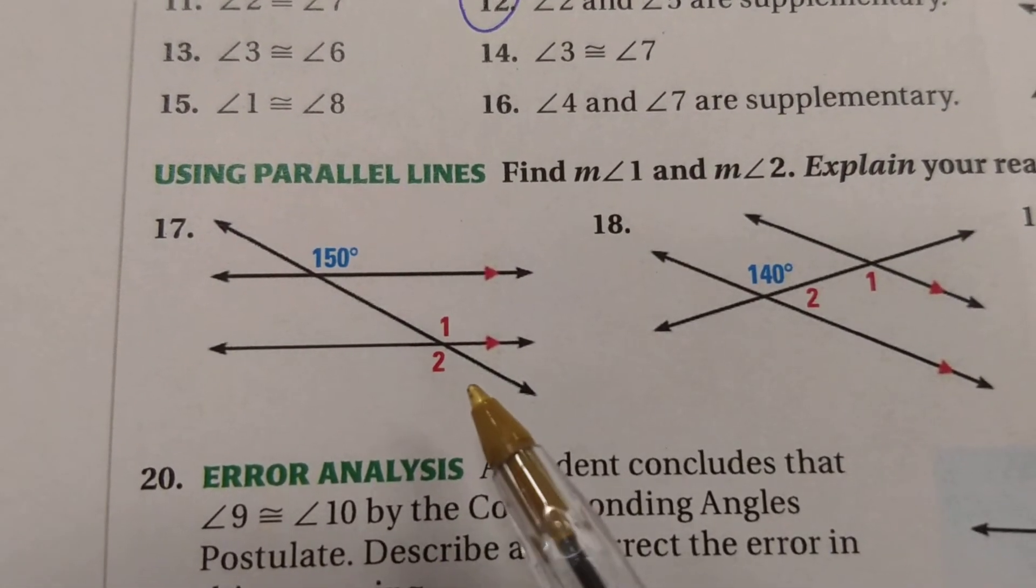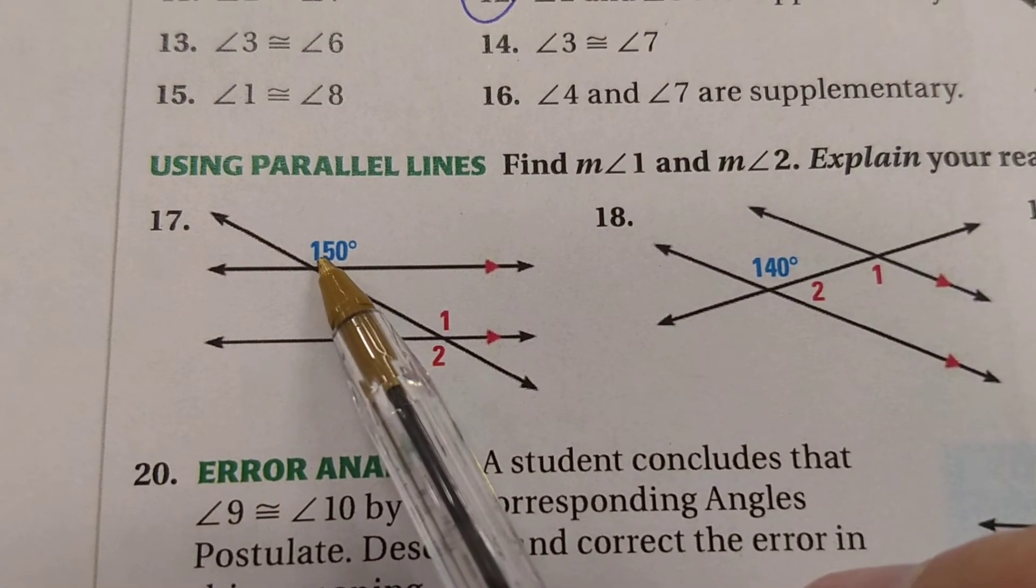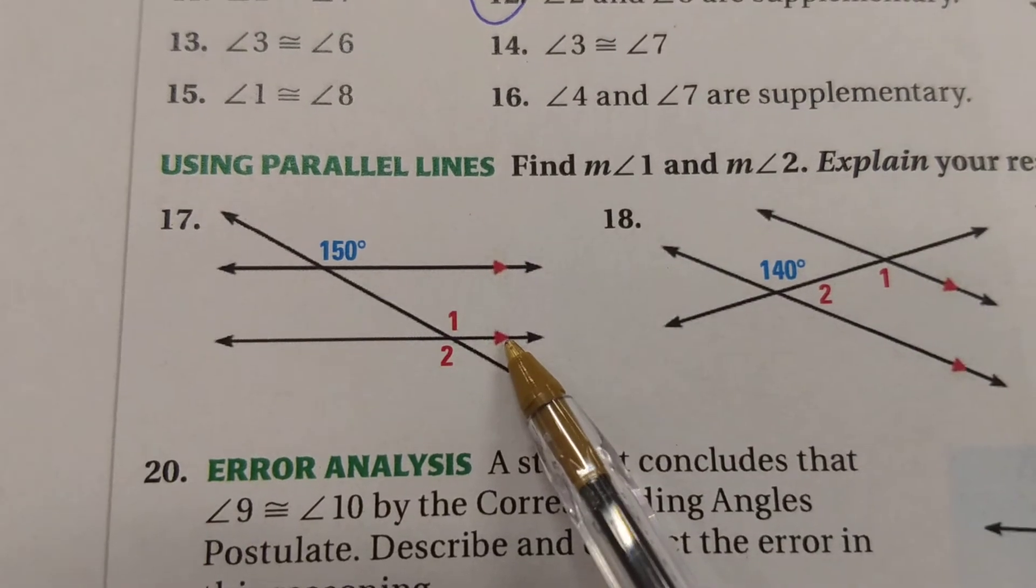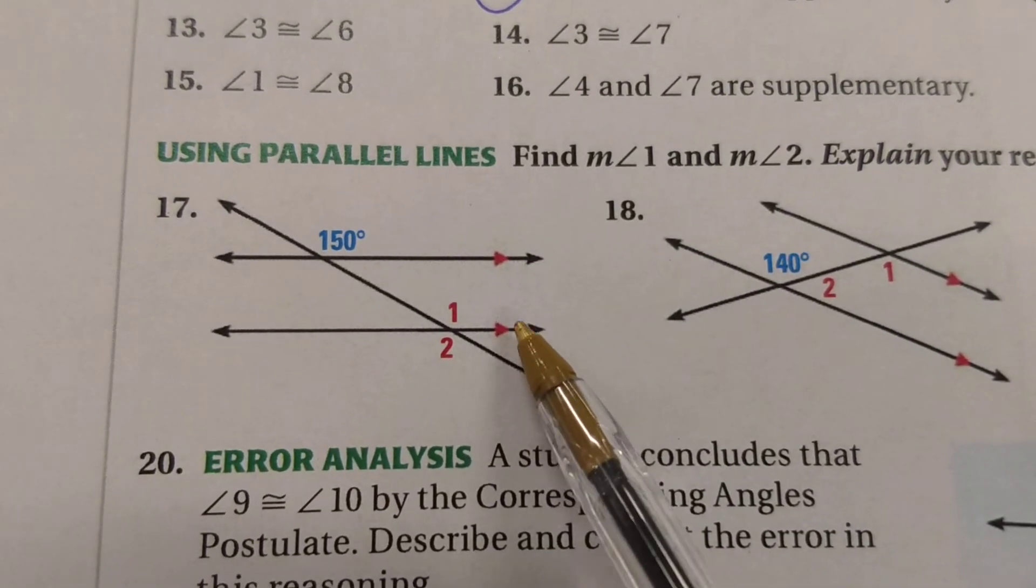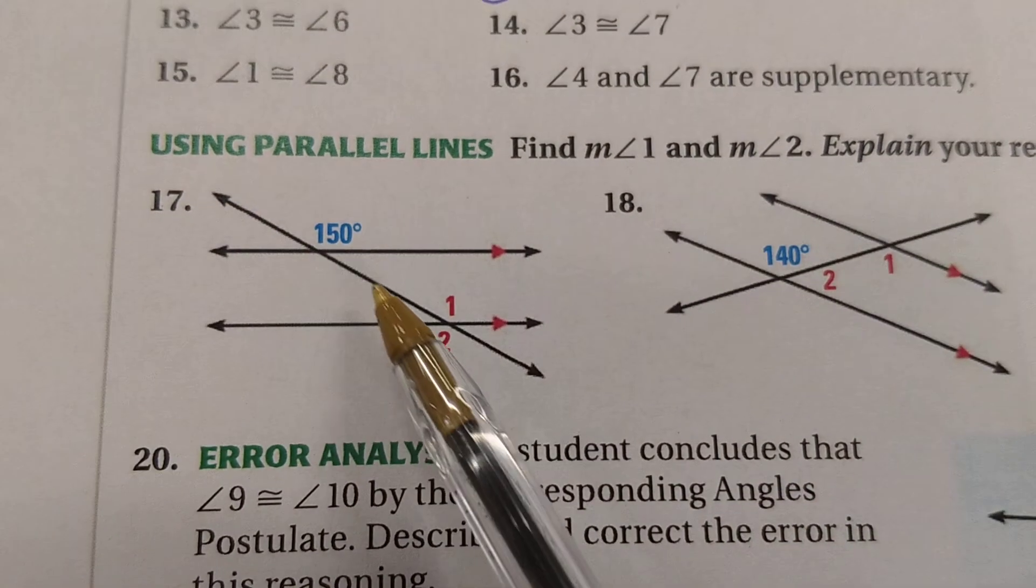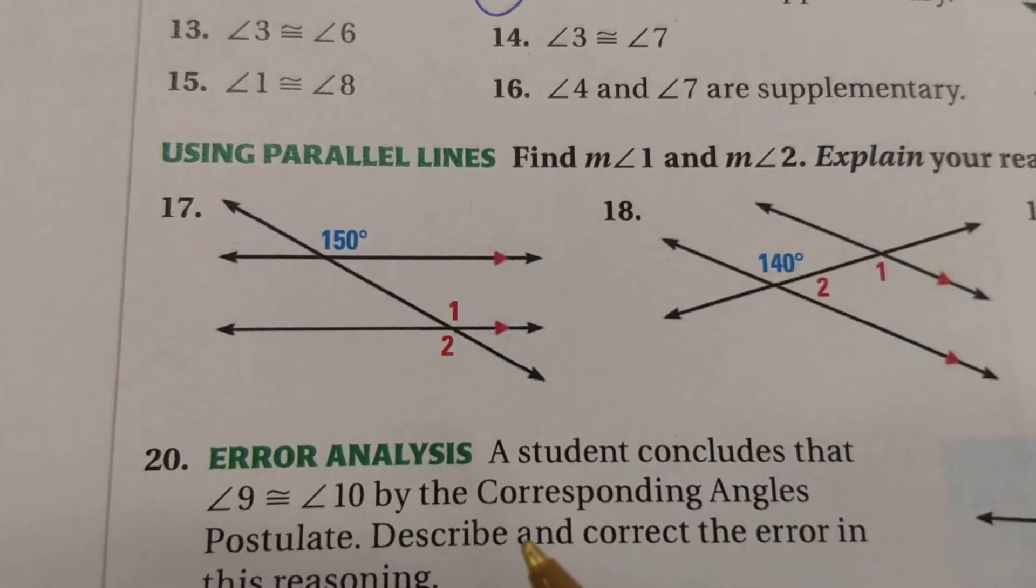Okay, but the only other information that I'm given really is this angle over here is 150 degrees. And I see that this line and this line are parallel. That's an important part because since those two lines are parallel and I've got this diagonal one cutting through as a transversal,